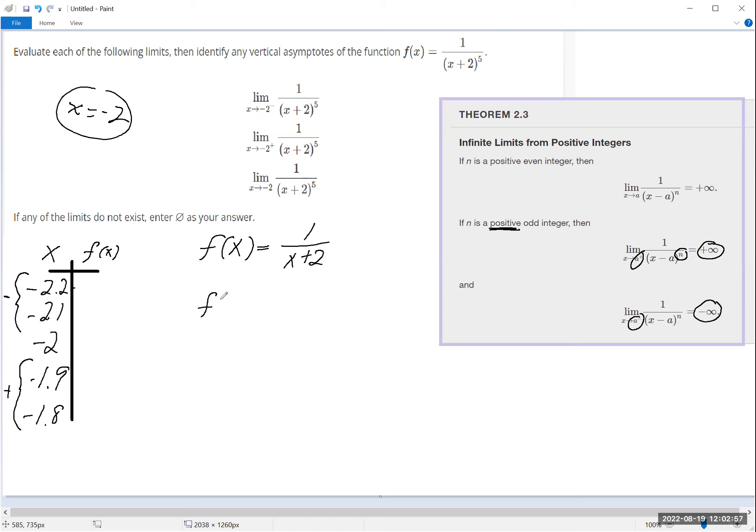So if I've got f of negative 2.2, so that's 1 over negative 2.2 plus 2, and so that's 1 over 0.2. This is two tenths, so if you do all the right fraction work you're going to find out that this is the same as one fifth, so this is 5.